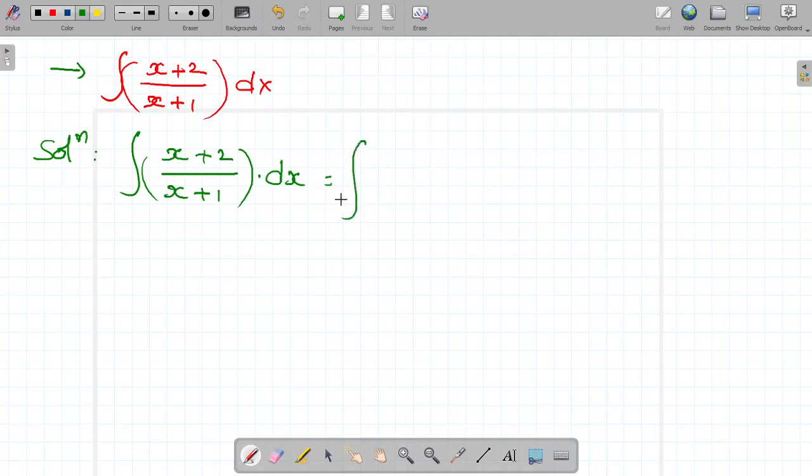Here, observe that integral x plus 2 can be written as x plus 1 plus 1. It can be written as x plus 1 plus 1 by x plus 1 into dx.